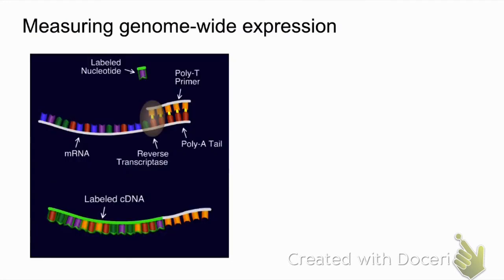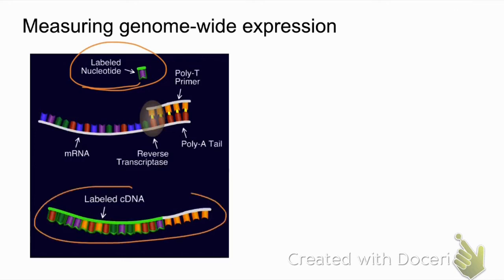Let's finish by talking about how we can measure gene expression from a whole genome using microarrays. We've talked about how to analyze microarrays, but let's step back and discuss how they're produced. The process begins the same way: mRNA is reverse transcribed using reverse transcriptase into cDNA. In this case, however, we use fluorescently labeled nucleotides to produce labeled cDNAs — typically using two fluorescent dyes that give a green or red color. These cDNAs are then hybridized to the microarray chip.